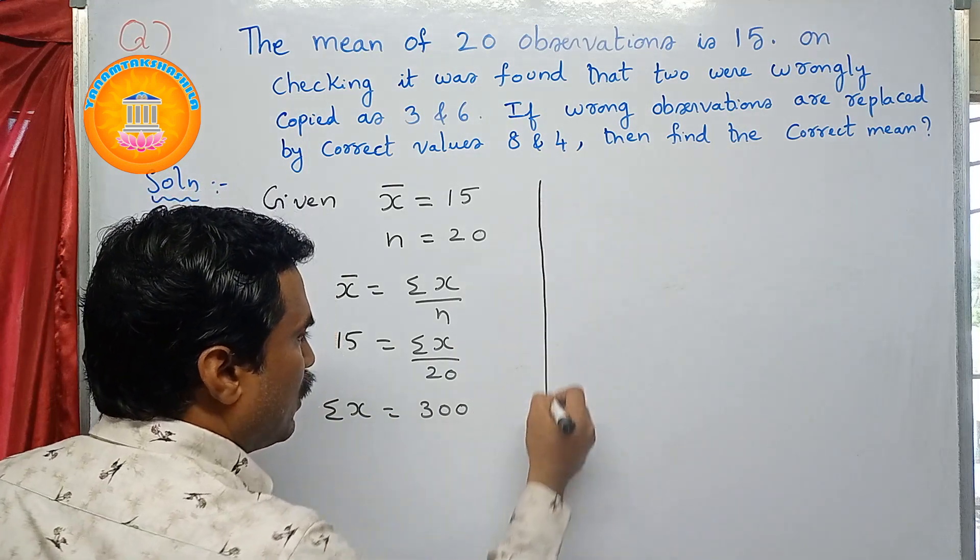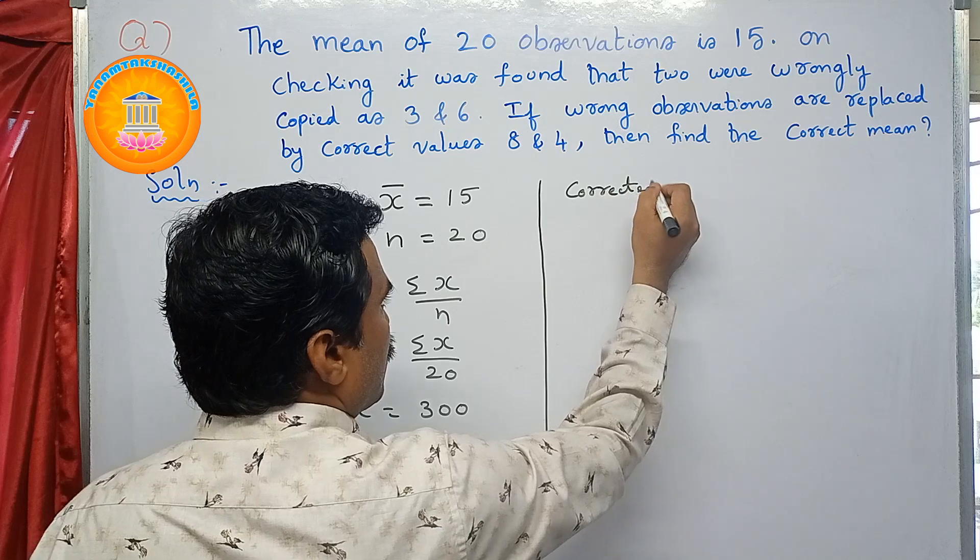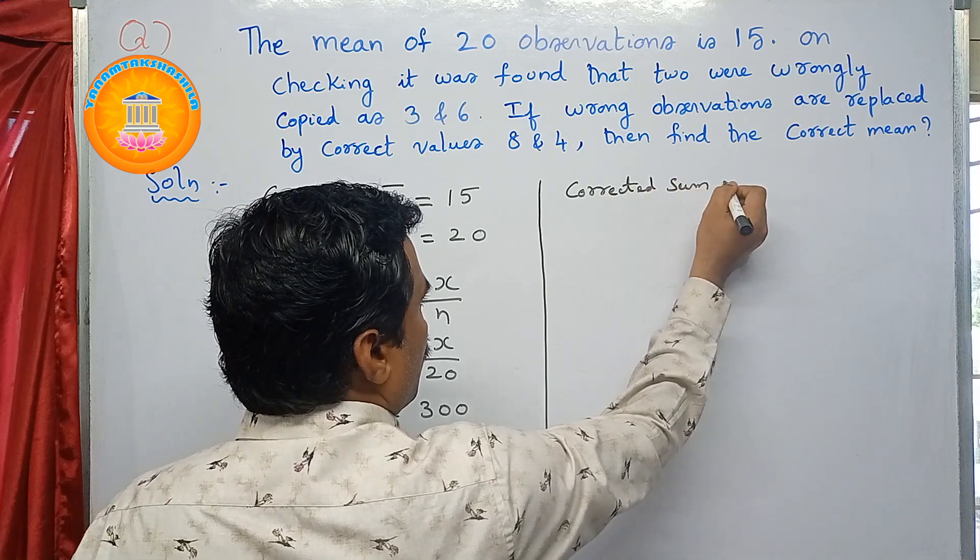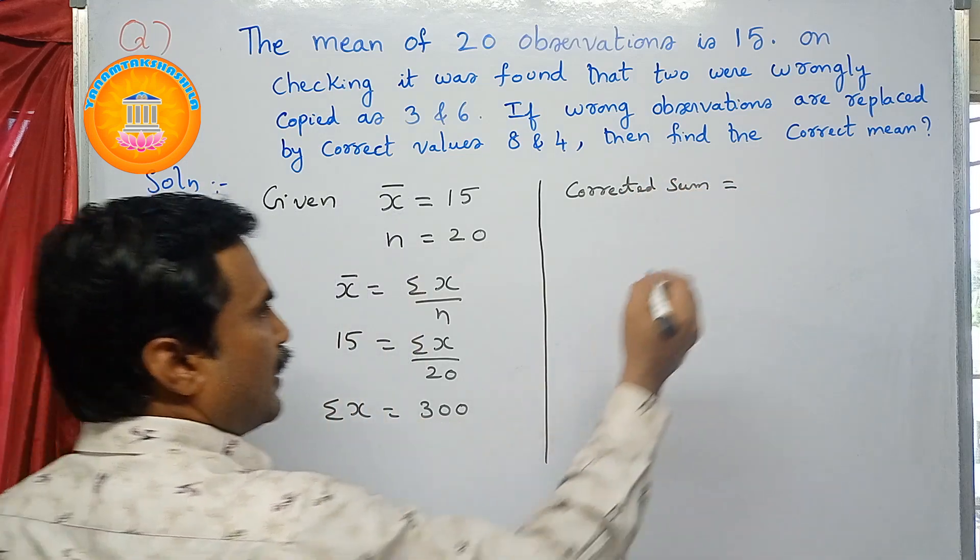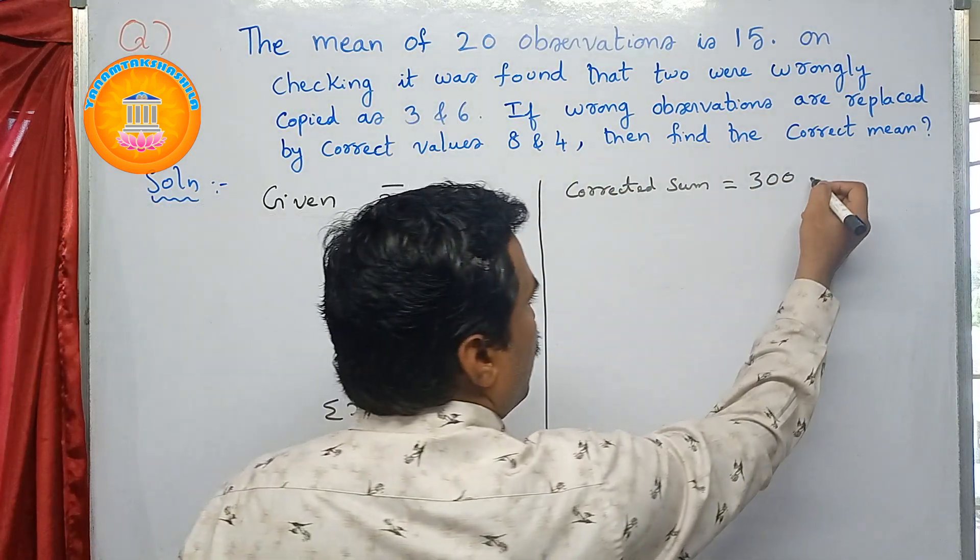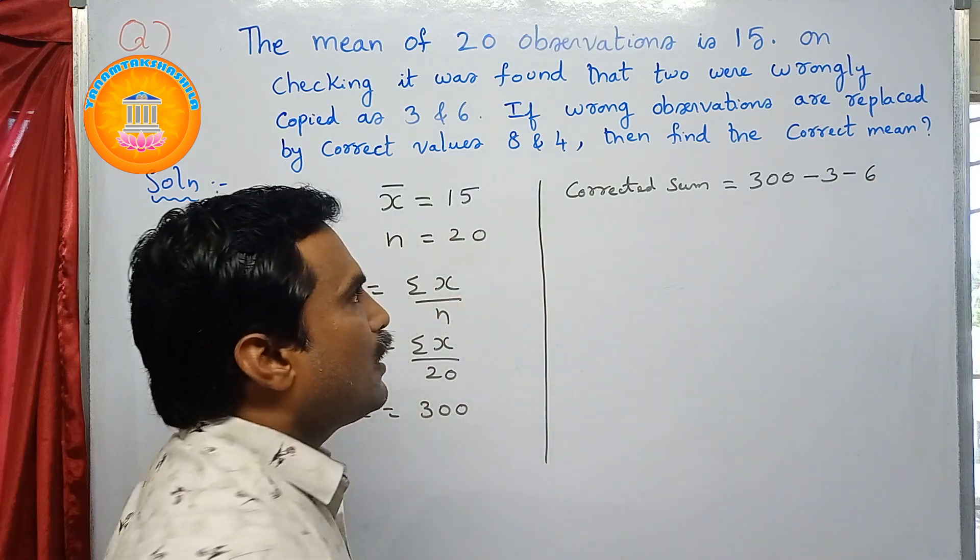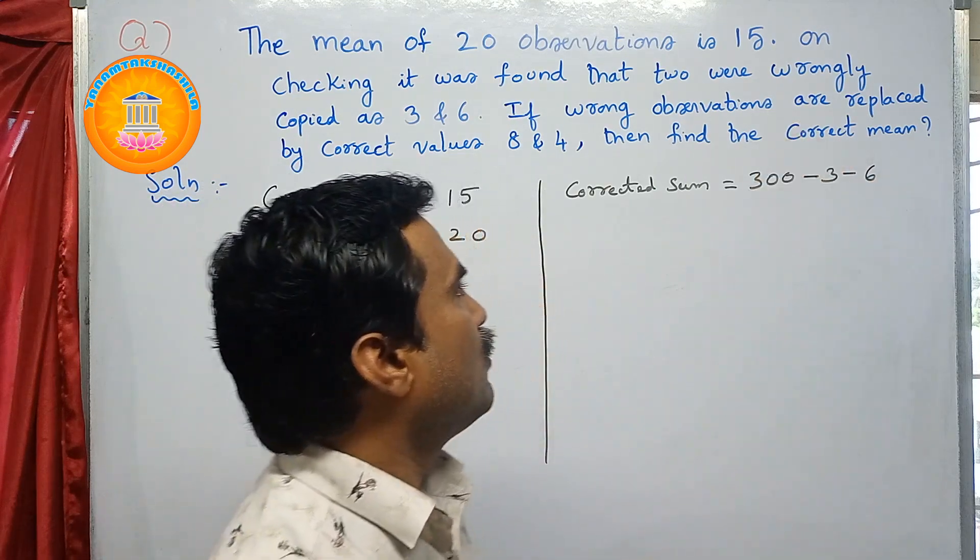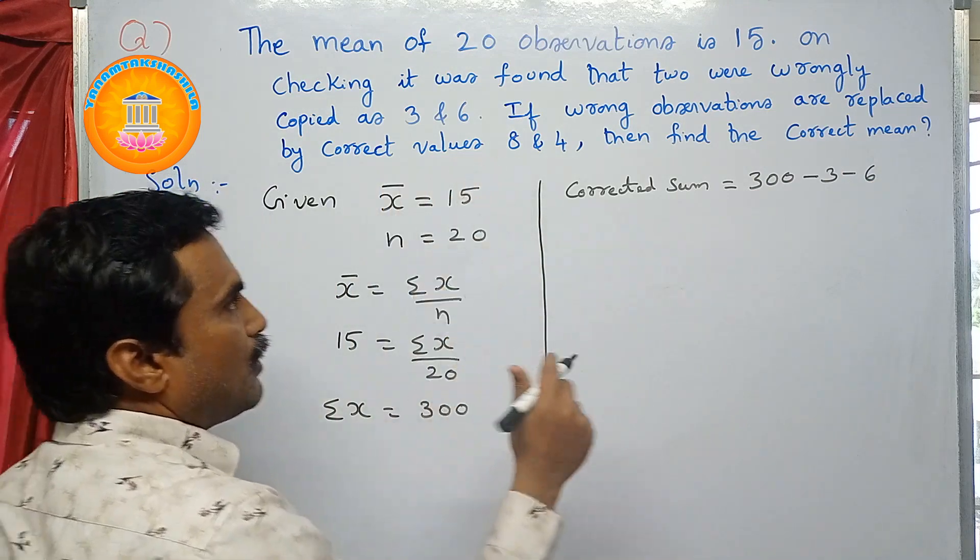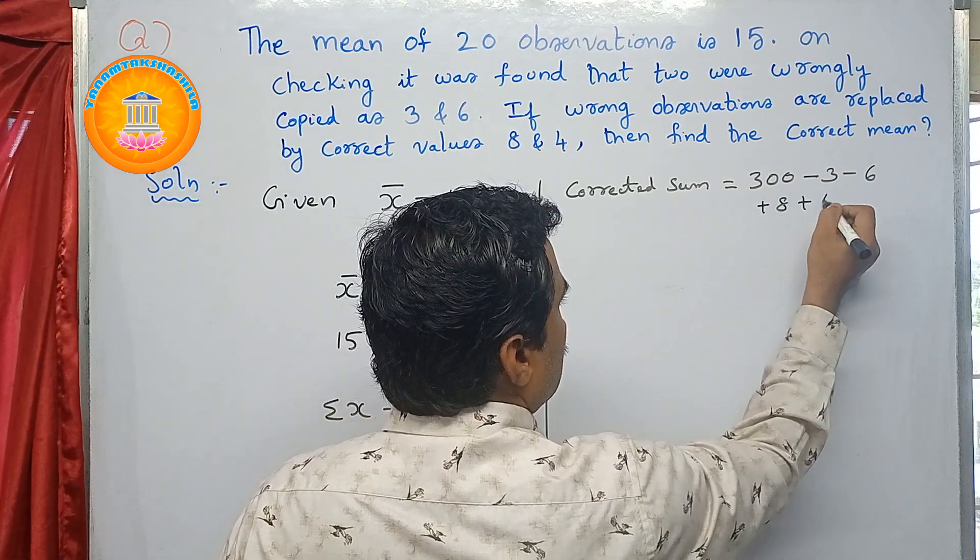So corrected sum equals, what is this? Σx is 300. So since these two values are wrong values, you have to subtract this, minus 3 minus 6, and then you have to add the correct values. That means correct values are 8 and 4. So you have to add that, plus 8 plus 4.